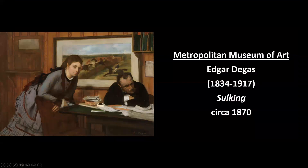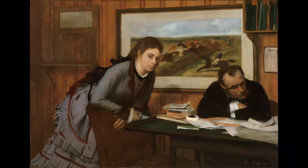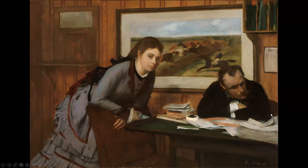This painting has really stumped historians because of its title — it's called 'Sulking,' from around 1870. Why Degas called it that, we have no idea. The woman depicted is a model and friend of Degas, and the gentleman on the right is a writer friend of his. People aren't sure if these two were romantically involved or if there's some problem going on. We know the identities of the two people but don't really know much beyond that.